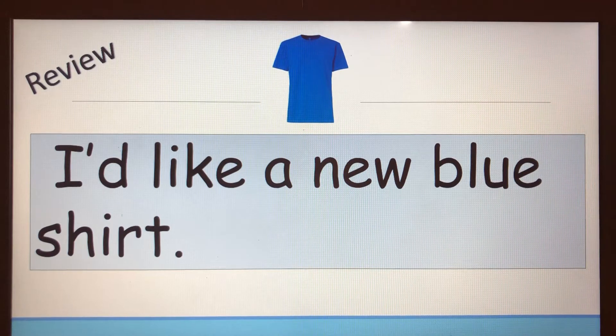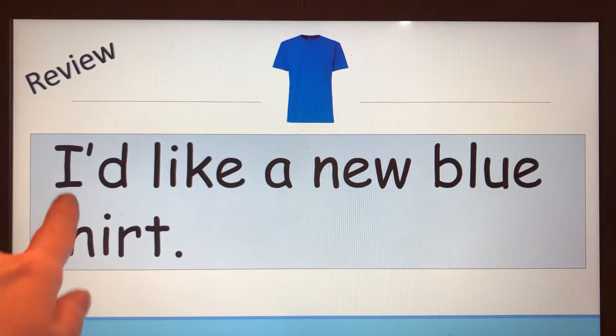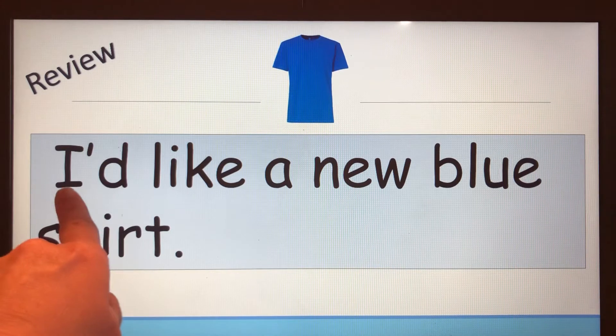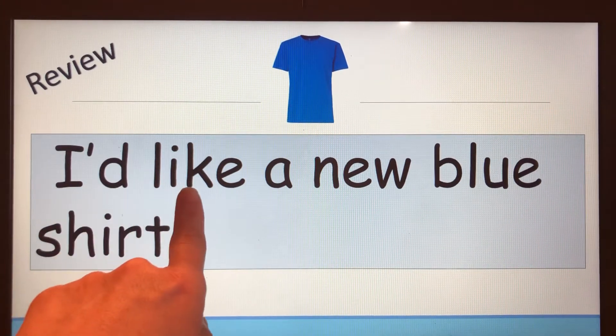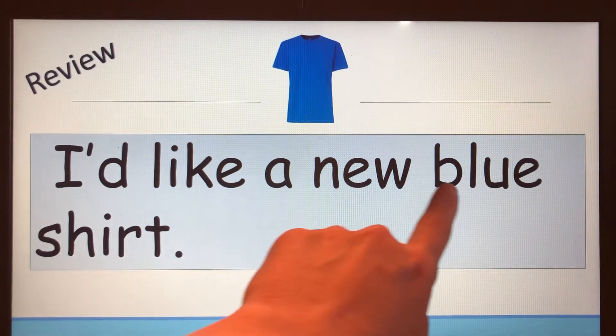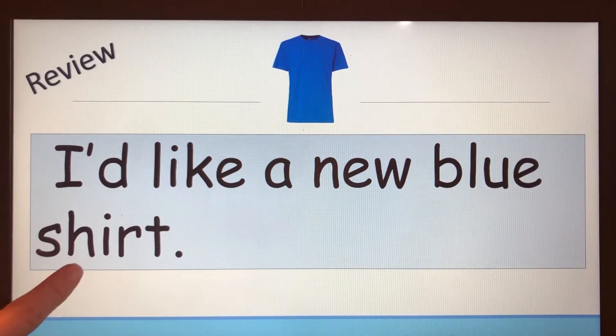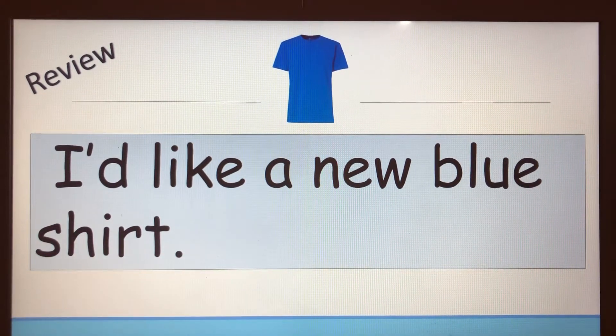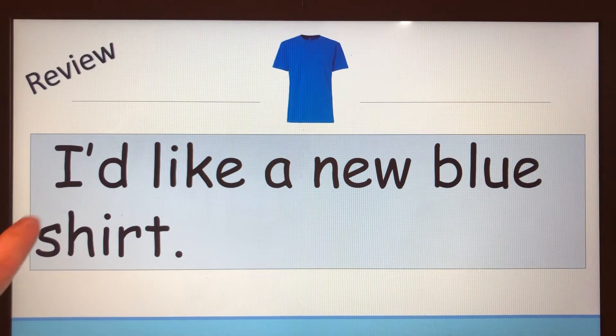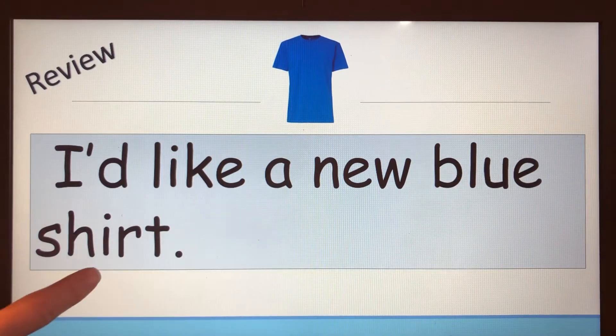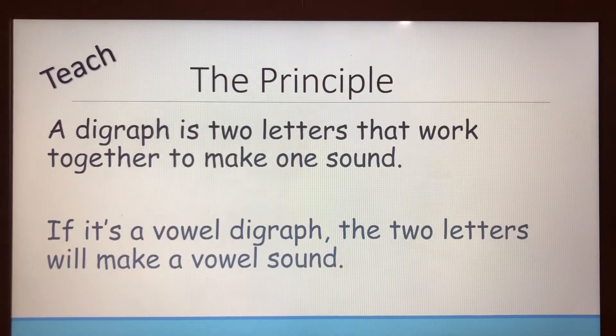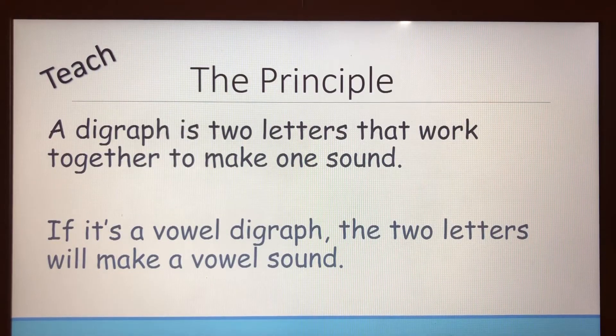Let's read this sentence. I see a contraction right here. How do you pronounce that word? I'd. I'd like a new blue shirt. Read it one more time through with me: I'd like a new blue shirt.